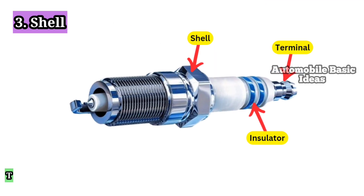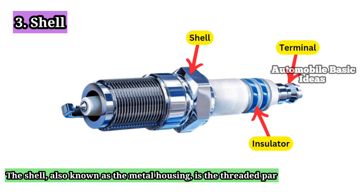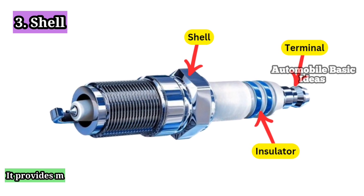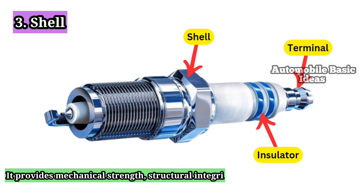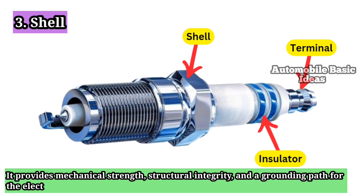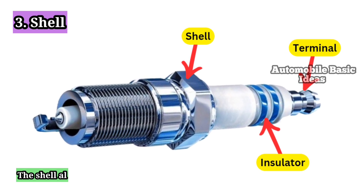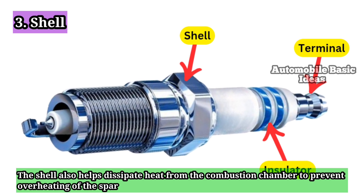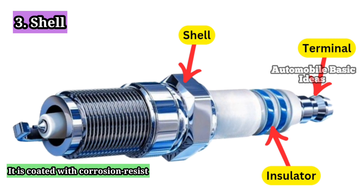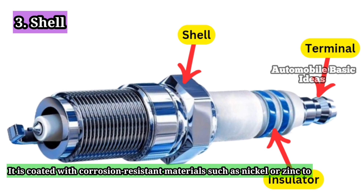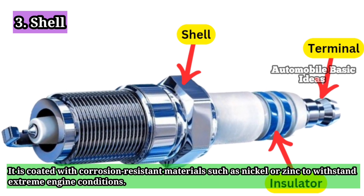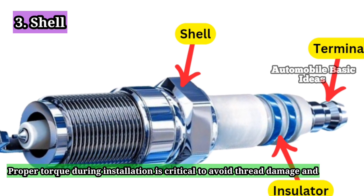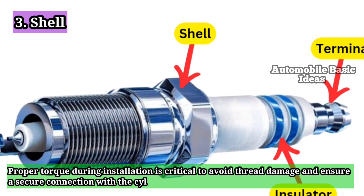3. Shell. The shell, also known as the metal housing, is the threaded part of the spark plug that screws into the cylinder head. It provides mechanical strength, structural integrity, and a grounding path for the electrical current. The shell also helps dissipate heat from the combustion chamber to prevent overheating of the spark plug. It is coated with corrosion-resistant materials such as nickel or zinc to withstand extreme engine conditions. Proper torque during installation is critical to avoid thread damage and ensure a secure connection with the cylinder head.